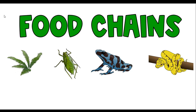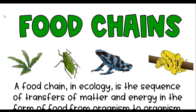The first thing is a food chain. In a food chain we're looking specifically at the feeding relationships with just one group of organisms in an ecosystem. A food chain is the sequence of transfers of matter and energy in the form of food from one organism to another.